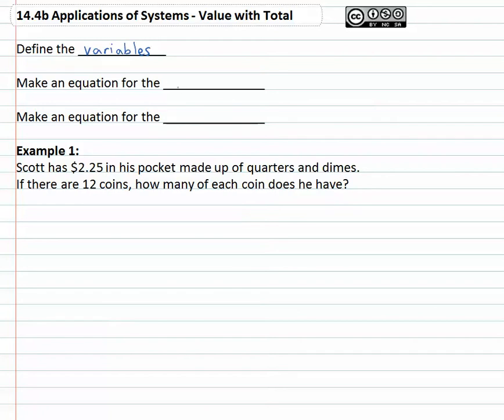And then as we set up an equation we need to make sure the equations are completely separate. One equation for the number of coins we're working with or the number of tickets or whatever we're working with and one equation for the value that's assigned to each of those things.